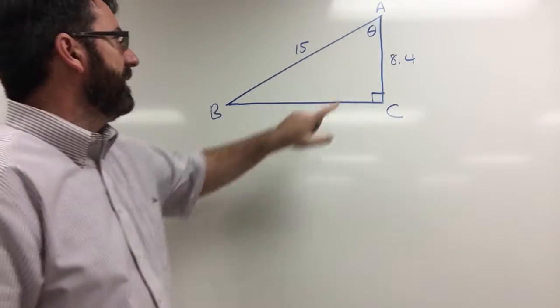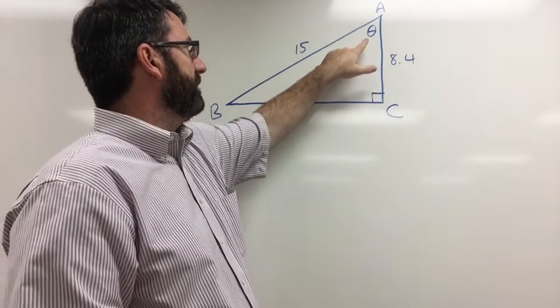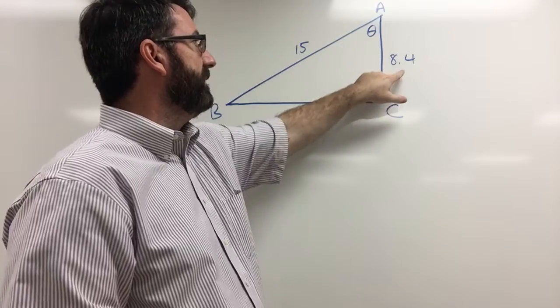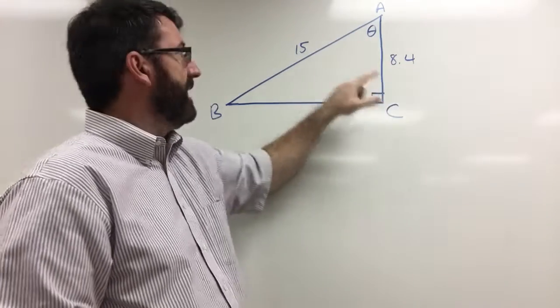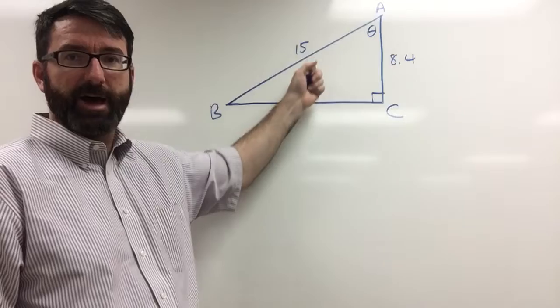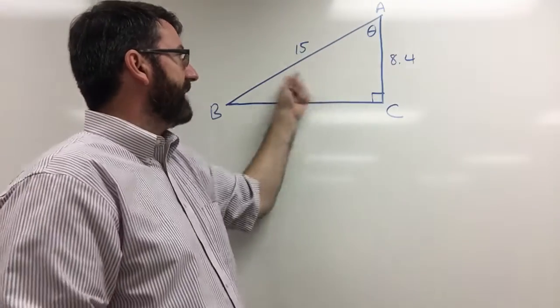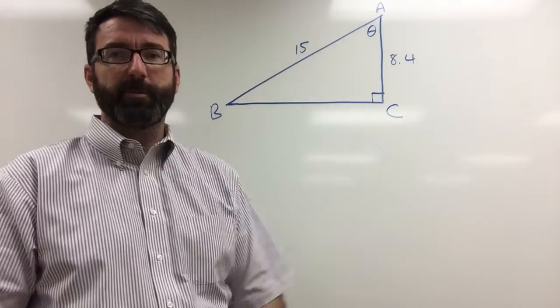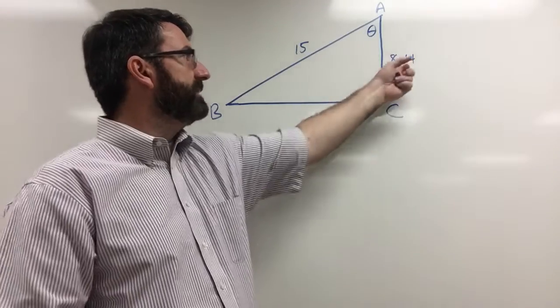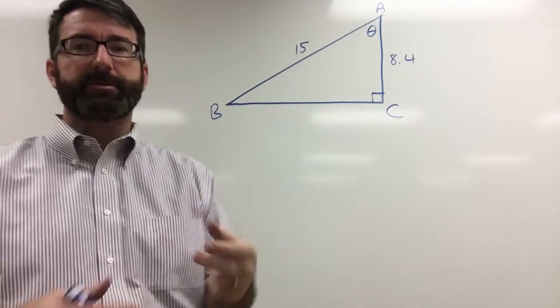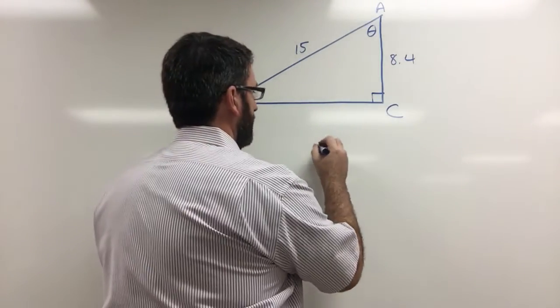Here in terms of this angle we know its adjacent side and we also know the hypotenuse. The hypotenuse is always the side that's directly across from our right angle. So if we know the adjacent and the hypotenuse we're going to want to use the cosine.